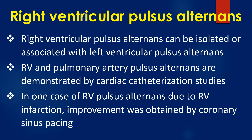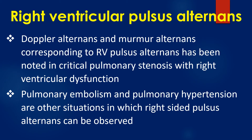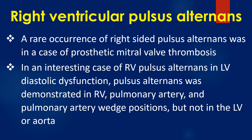Right ventricular pulse alternance can be isolated or associated with left ventricular pulse alternance. Right ventricular and pulmonary artery pulse alternance are demonstrated by cardiac catheterization studies. In one case of right ventricular pulse alternance due to right ventricular infarction, improvement was obtained by coronary sinus pacing. Doppler alternance and murmur alternance corresponding to right ventricular pulse alternance has been noted in critical pulmonary stenosis with right ventricular dysfunction. Pulmonary embolism and pulmonary hypertension are other situations in which right-sided pulse alternance can be observed. A rare occurrence of right-sided pulse alternance was in a case of prosthetic mitral valve thrombosis.